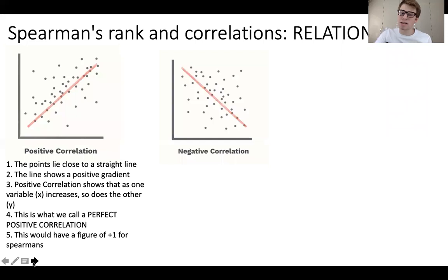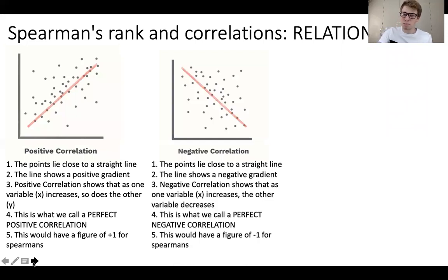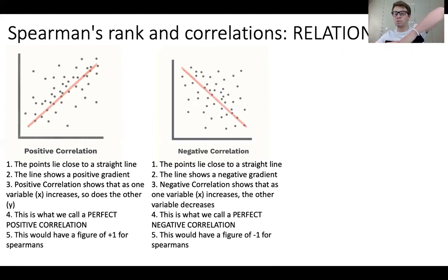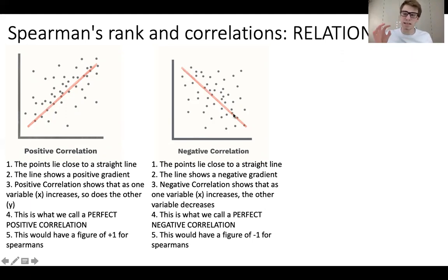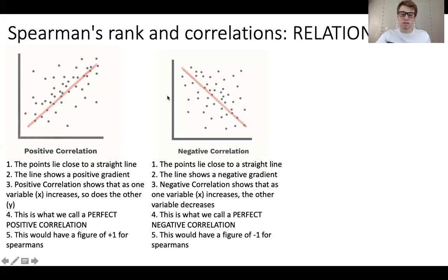In contrast, we have a negative correlation. This is when the points again lie close to a straight line, but the gradient is negative — sloping downwards. As the variable on the horizontal axis increases, the variable on the Y-axis will decrease. That's what we call a perfect negative correlation. This would have a figure of minus one for Spearman's rank, because it's a definitive, strong relationship where as one variable increases, the other decreases.